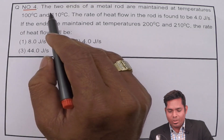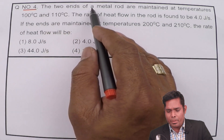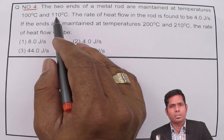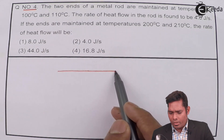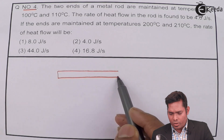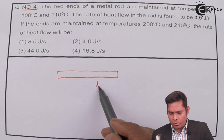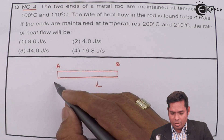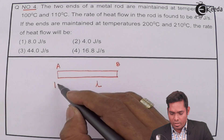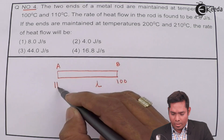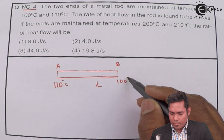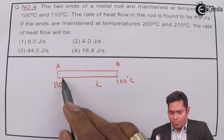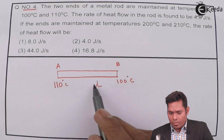This question is: the two ends of a metal rod are maintained at temperatures 100 degrees centigrade and 110 degrees centigrade. If I have a rod of length L, the two ends A and B are maintained at 100 and 110 degrees centigrade. This end is at high temperature, this end is at low temperature, and the difference of temperature is 10 degrees.